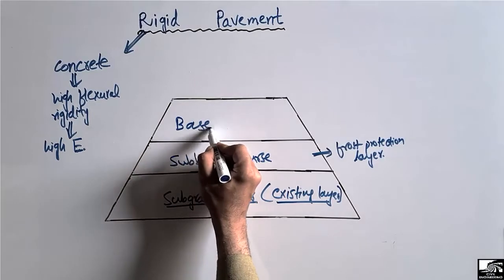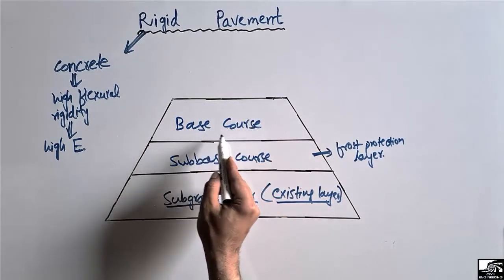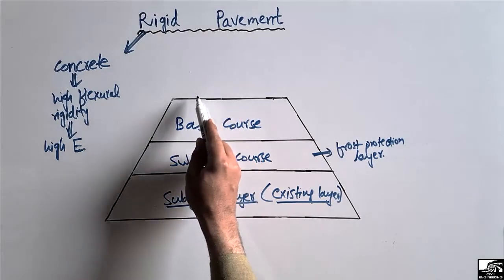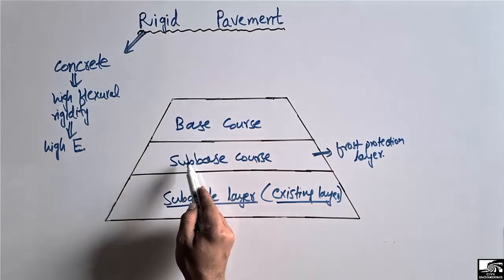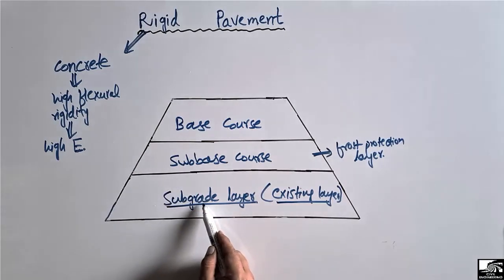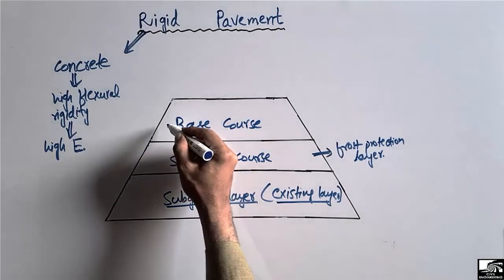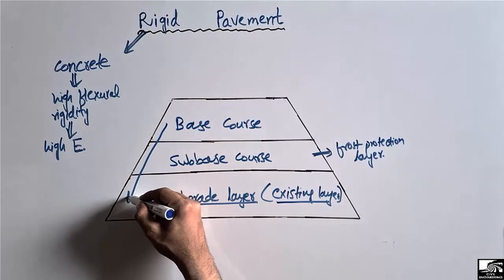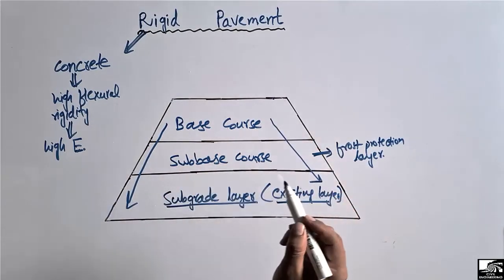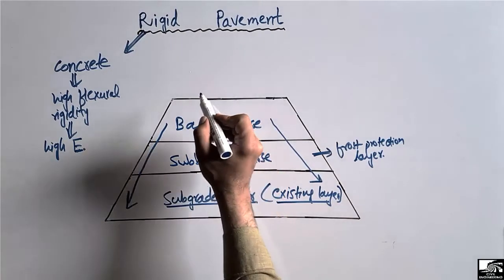The base course helps to take the load from the top layer and distribute it into the sub-base course, and the sub-base course then transfers the load to the subgrade layer. In this way, the load is distributed from the top layer down to the bottom layer.